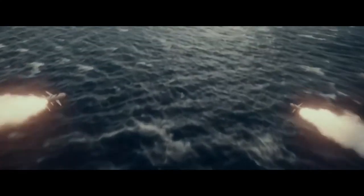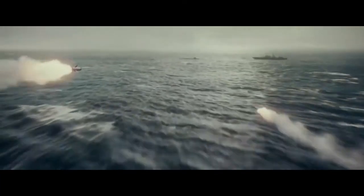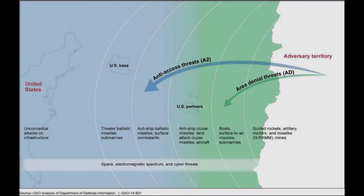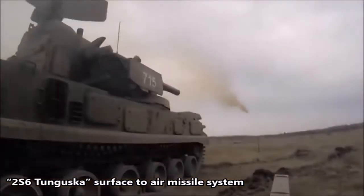A2AD is comprised of two parts. The anti-access, or A2, part of A2AD is used to prevent or constrain forces from entering the conflict or a specified area of operation. The area denial, or AD, part of A2AD is used to severely slow or reduce enemy freedom of maneuver once inside the designated area of operation.